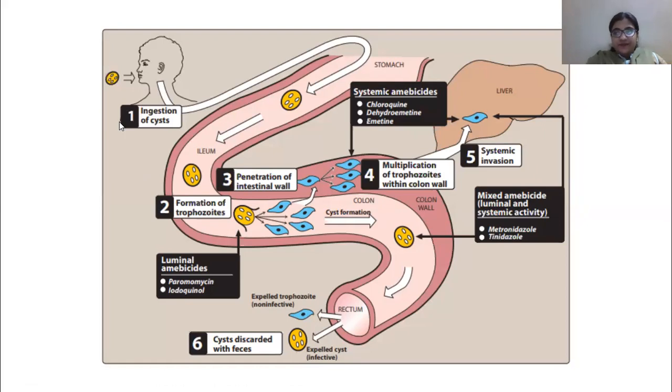Entamoeba histolytica is actually an amoeba. If it infects a human being, it has two forms of disease: invasive and non-invasive. By invasive I mean it would go and attack other organs of the body. When I'm saying non-invasive, it means it is only being limited within the GI tract and not affecting other organs of the body.